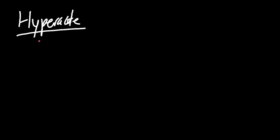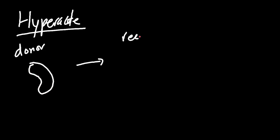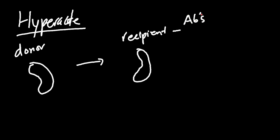So let's talk about what hyper acute rejection is. We have a donor with a kidney, and we're going to put that kidney into the recipient. Now, the recipient is going to have antibodies circulating in their bloodstream — antibodies against bacteria and various foreign antigens that the body has produced throughout its life.